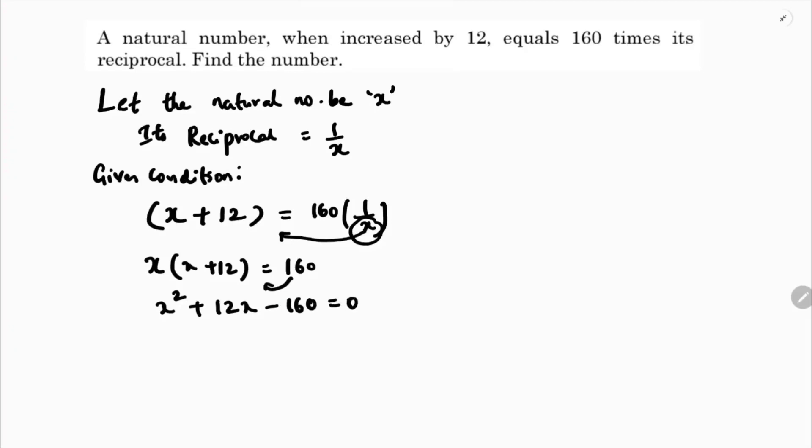x squared plus 12x minus 160 equals 0. Factors of 160: 2 times 80, 2 times 40, 2 times 20. If we check, 20 and 8 are the factors we need because 20 minus 8 equals 12.